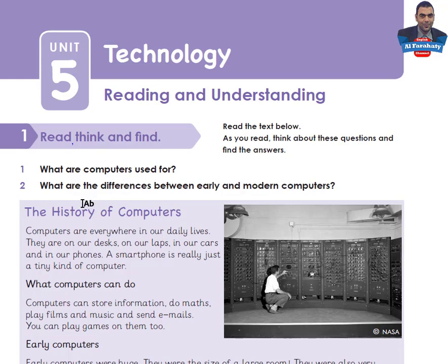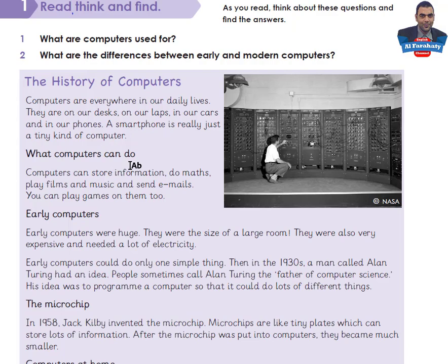The History of Computers. Computers are everywhere in our daily lives. They are on our desks, in our labs, in our cars, and in our phones. A smartphone is really just a tiny kind of computer. What computers can do: computers can store information, do maths, play films and music, and send emails. You can play games on them too. Early computers were huge — they were the size of a large room. They were also very expensive and needed a lot of electricity.